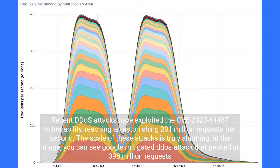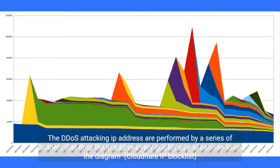Recent DDoS attacks have exploited the CVE-2023-44487 vulnerability, reaching an astonishing 201 million requests per second. The scale of these attacks is truly alarming. In the image, you can see a Google-mitigated DDoS attack that peaked at 398 million requests. The DDoS attacking IP addresses are performed by a series of botnets that drop the IP address very quickly, as you can see from the diagram — the Cloudflare IP Blocklist.